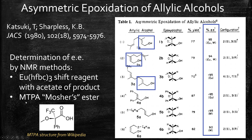Another method used was MTPA, also known as Mosher's ester. This is Mosher's acid, a chiral acid. If you combine it with the alcohol to make an ester, you've now made diastereomers when combined with both enantiomers, and that's another way to identify each enantiomer in the NMR. Both of these methods were used to determine the EEs in the article.